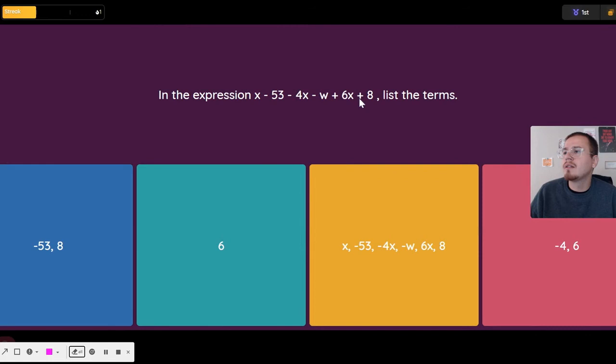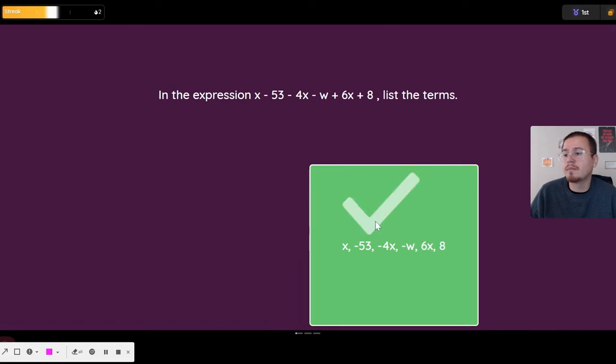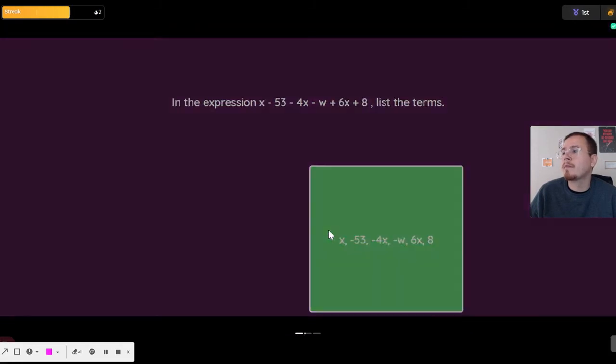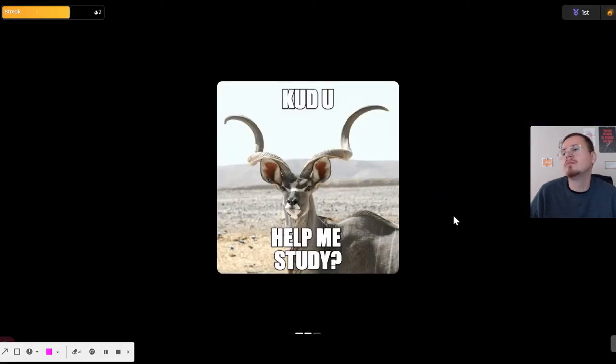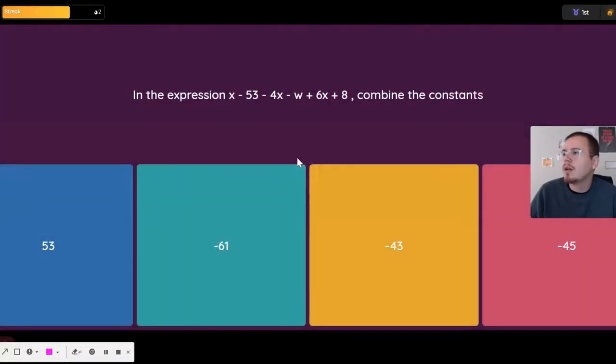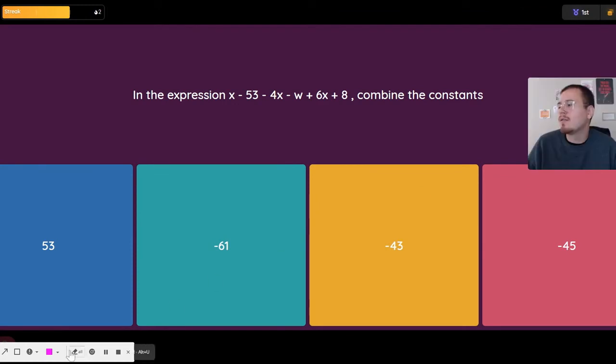List the terms. So everything is a term. It's like every word in a sentence is a word. Every object in an expression, every letter, every number is a term. Combine the constants. So first identify your constants. I got negative 53 and 8, so that's going to be negative 45.